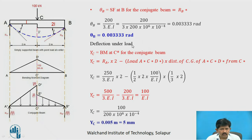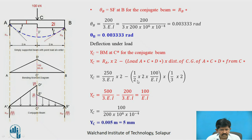To find the deflection under the load, YC equals the bending moment at C for the conjugate beam. Considering the left portion, YC equals RA into 2, minus the triangular load (one-half base 2 into height 100 upon EI) into CG from C* (one-third of 2). So YC equals 250 upon 3EI into 2, minus one-half into 2 into 100 upon EI into one-third of 2. Solving, YC equals 100 upon EI, and substituting values of E and I, YC equals 5 mm.